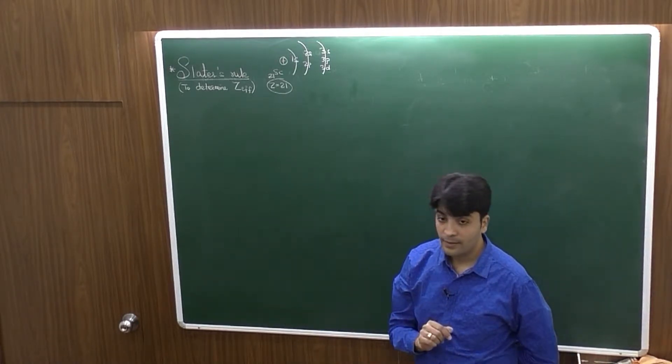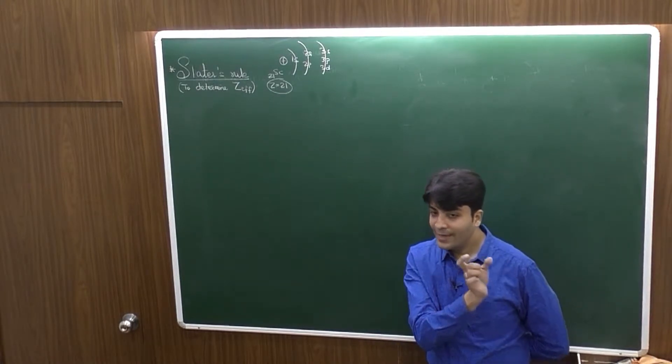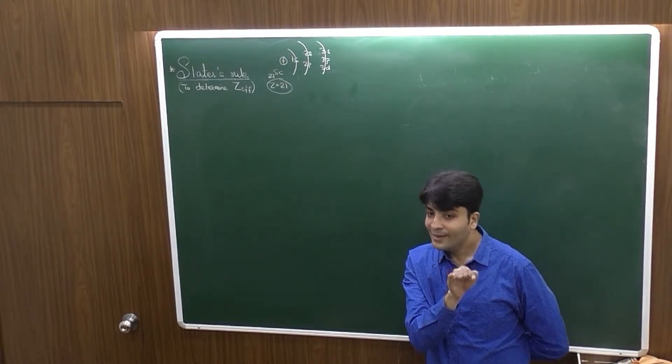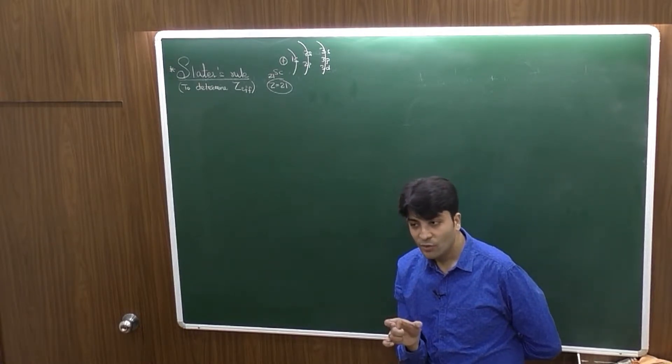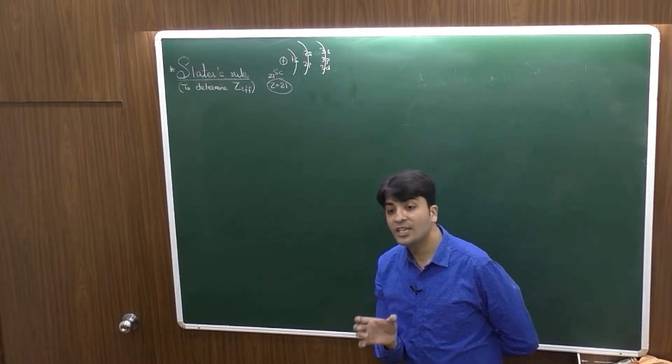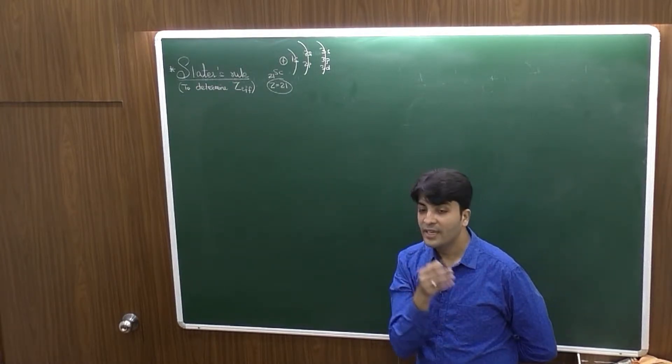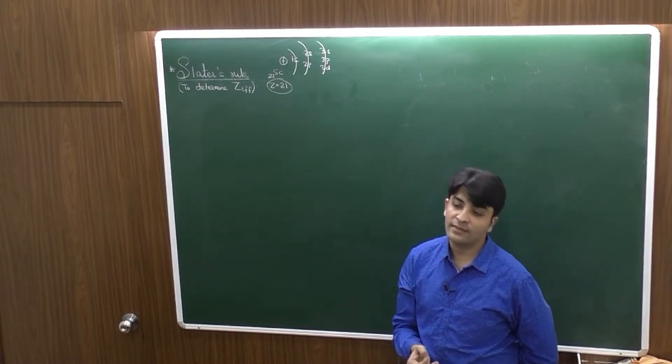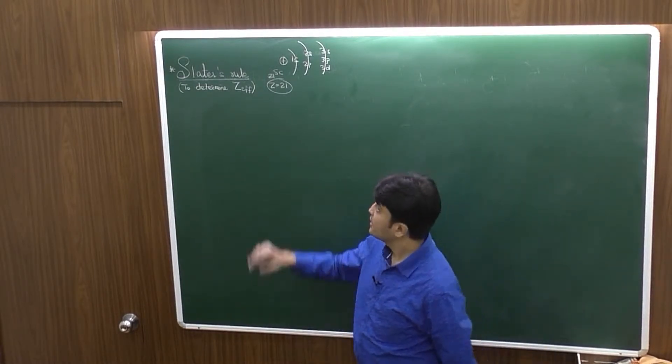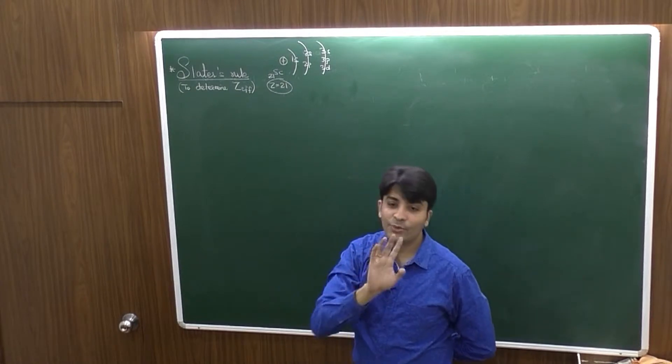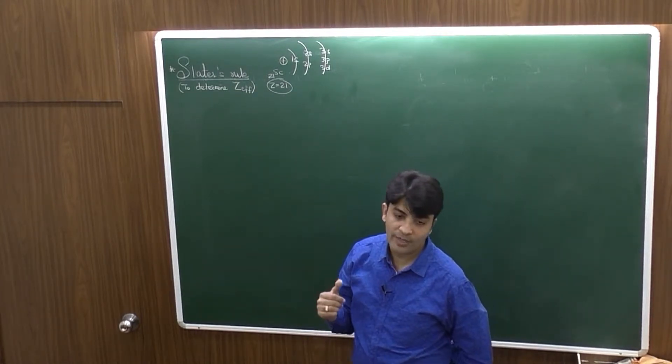As we go away from the nucleus, the electrons will experience lesser attraction because of the inner shells. So, the inner electrons are shielding the nucleus charge with the outer electron. This screening is called as the shielding effect. So, in simple language, 1S can see all the 21 protons.